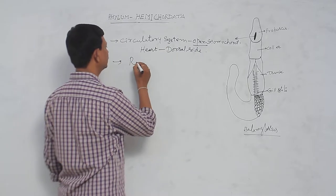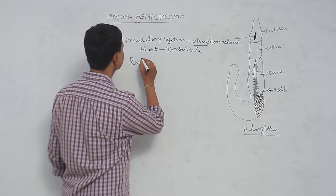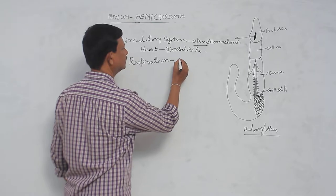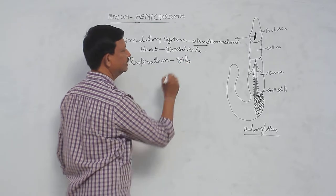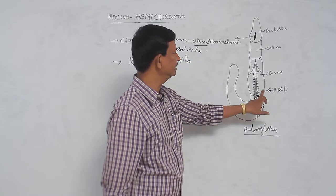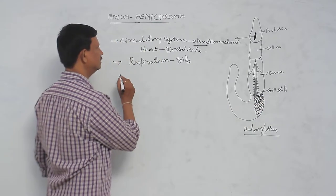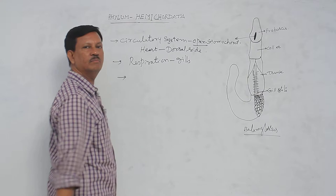Respiration takes place through body surface by gills. Respiration takes place by gills. Here you can see in the trunk region, gills are present inside. The exchange of gases takes place here and development is indirect.